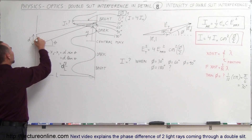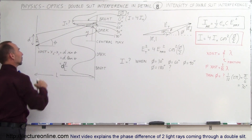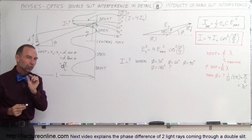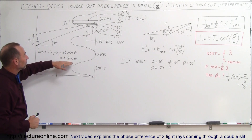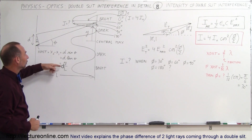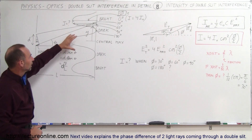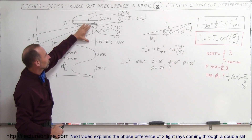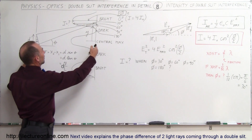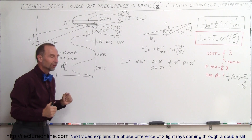This angle theta is the same as the angle theta shown in the diagram. Since these are very small angles, the sine of theta equals the tangent of theta. Therefore, the extra distance traveled is equal to the distance y on the screen divided by the distance from the slits to the screen.